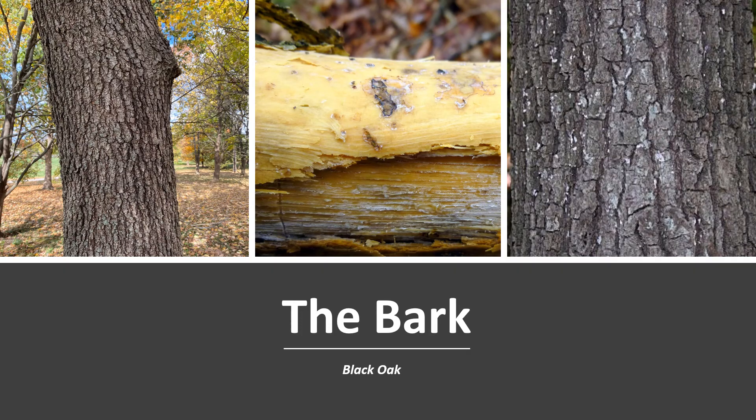The bark of black oak is smooth and gray on young oaks, but becomes thick and rough with deep vertical furrows and horizontal breaks, and darkens to nearly black. The inner bark is yellow-orange.